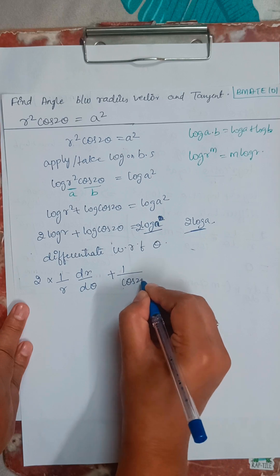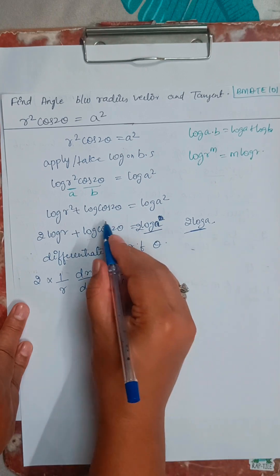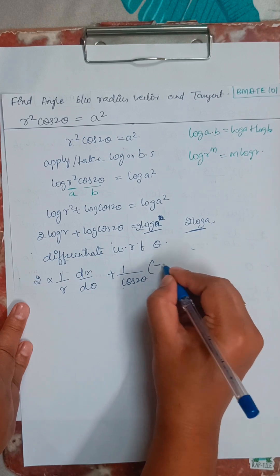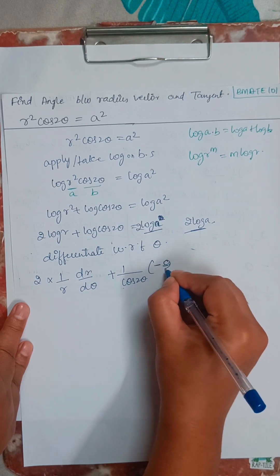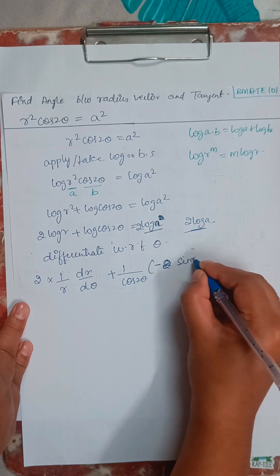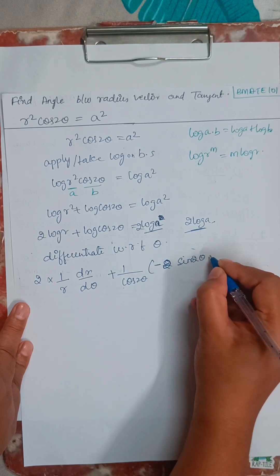for this log cos 2 theta, 1 by cos 2 theta. Differentiation of cos 2 theta, that is going to be minus sin 2 theta. This 2 I will take it, times sin 2 theta.